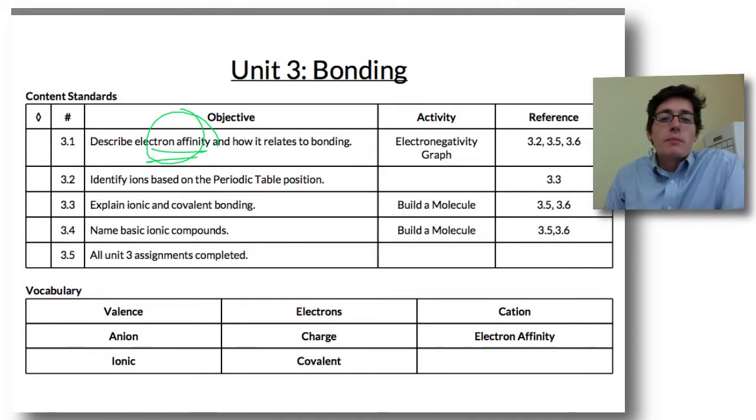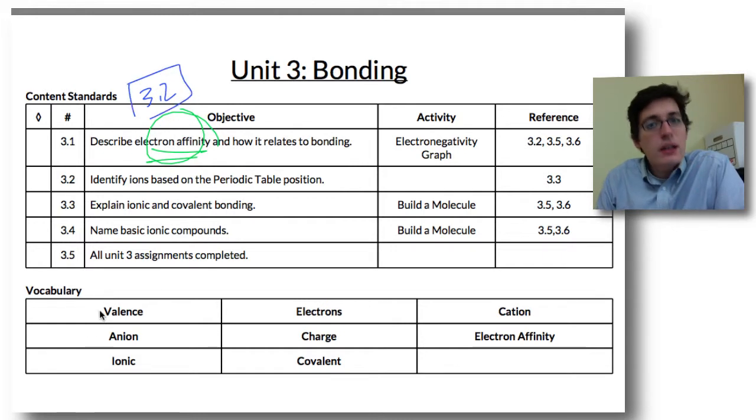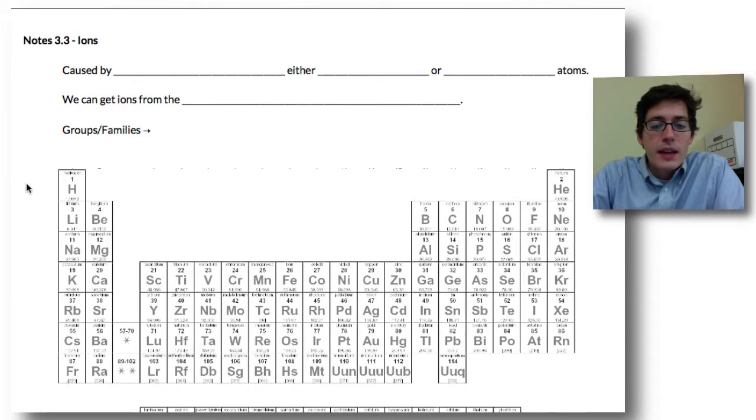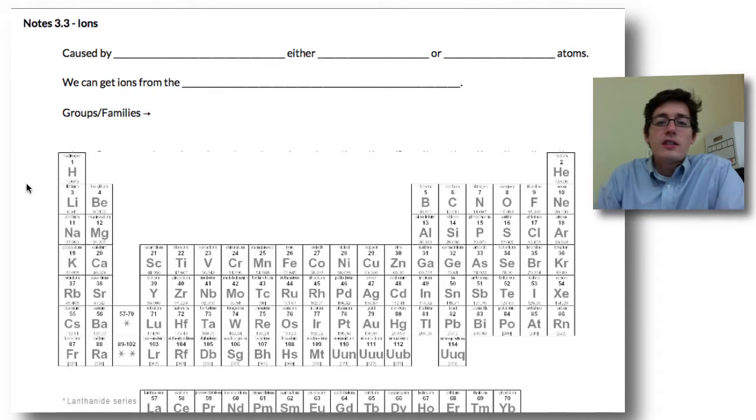Hello again everybody, we are back with video number three or note section three. Remember the electron affinity was 3.2 from the last video you watched. Today we're going to take a look at ions - what are ions, what are the names for certain kinds of ions, and things like that. We're looking at objective 3.2 now, and we're going to scroll down to ions.